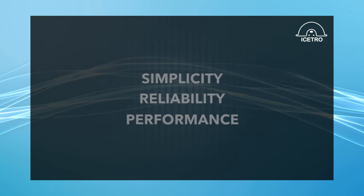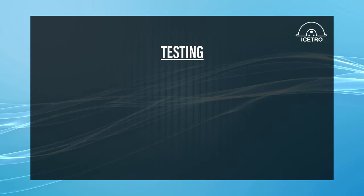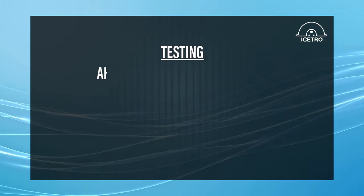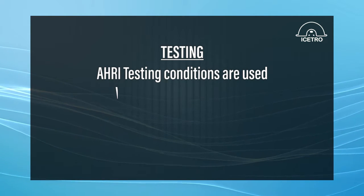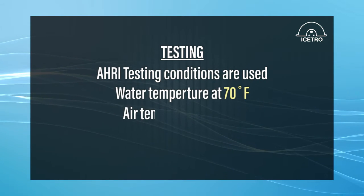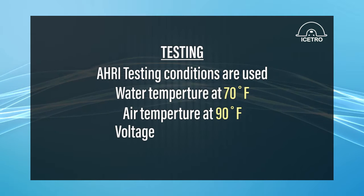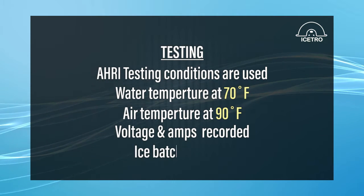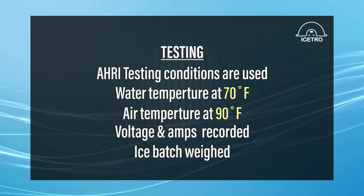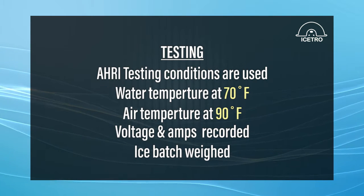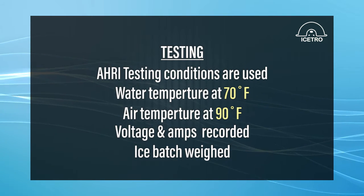All iStro ice makers are run for three cycles prior to shipment. HRI testing conditions are used with water temperature at 70 degrees, air temperature at 90 degrees. Voltage and amperage is recorded and ice batch is weighed. If the machine does not pass inspection and specifications, it is pulled out of production.